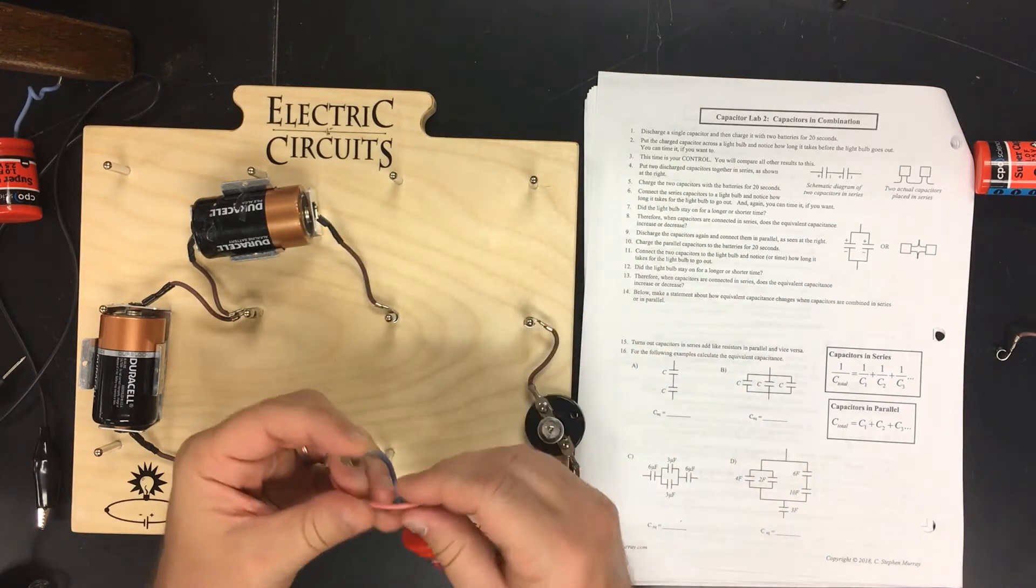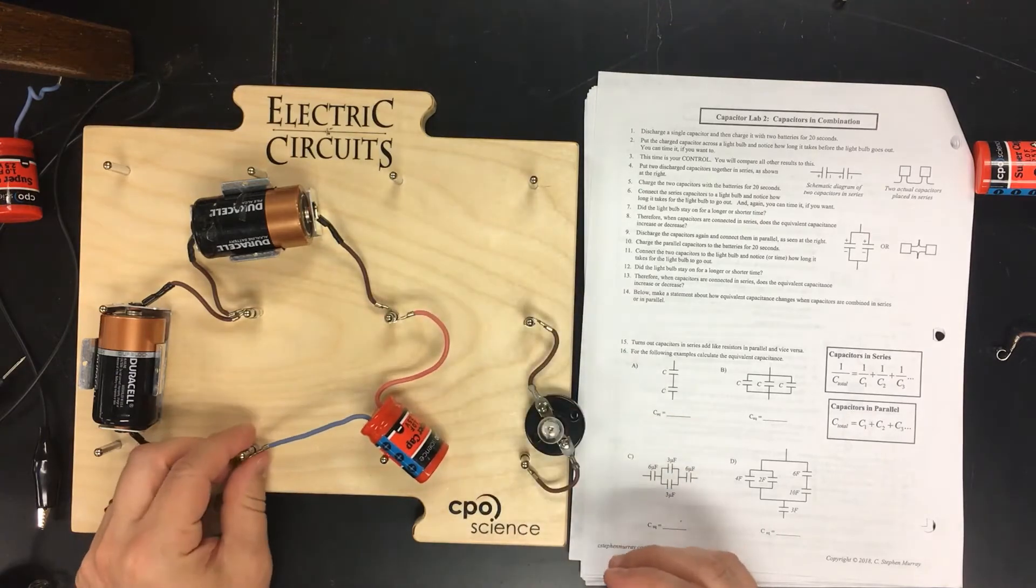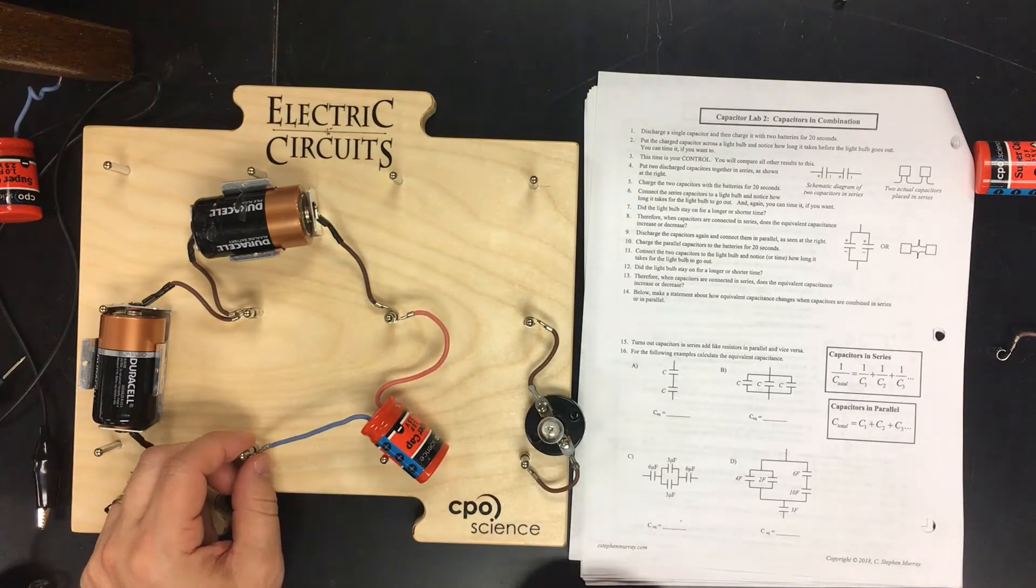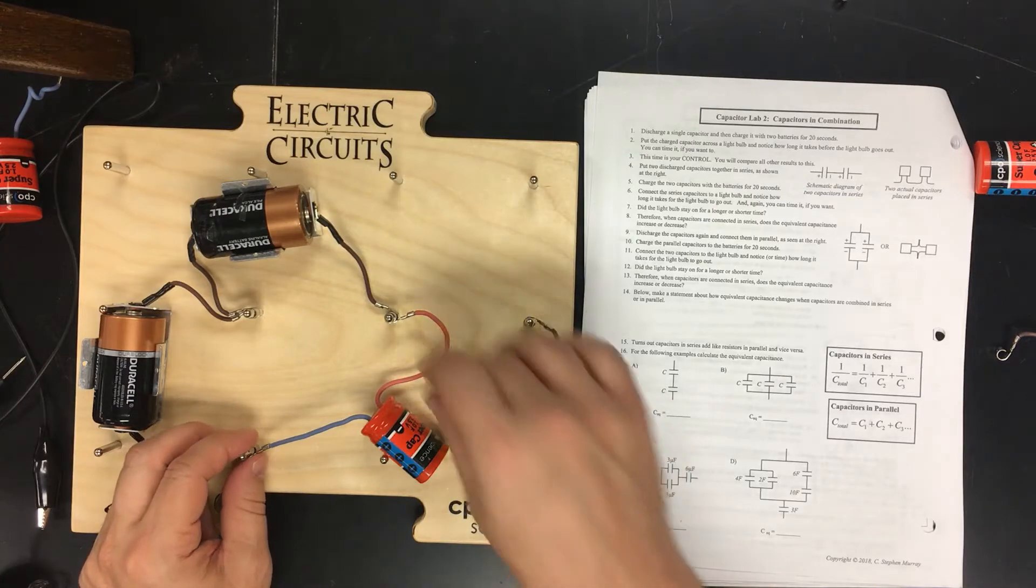Now it says charge it for 20 seconds. Counting: 1, 2, 3, 4, 5, 6, 7, 8, 9, 10, 11, 12, 13, 14, 15, 16, 17, 18, 19, 20.